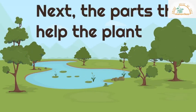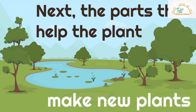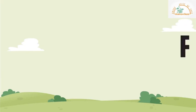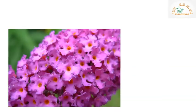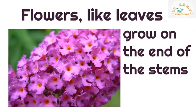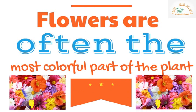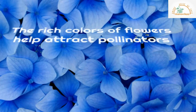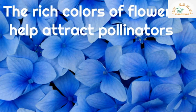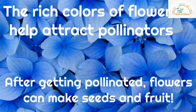Now for the parts that help the plant make new plants. The next part we are going to look at are flowers. Flowers, like leaves, grow on the end of stems. Flowers are often the most colorful part of the plant. The rich colors of flowers help attract pollinators — that's why they are beautiful. After getting pollinated, flowers can make seeds and fruits.